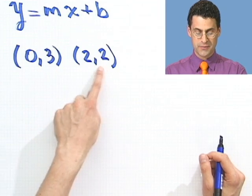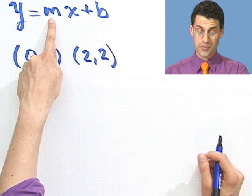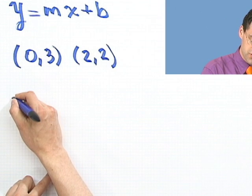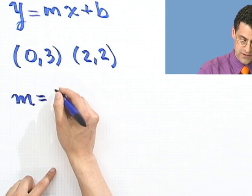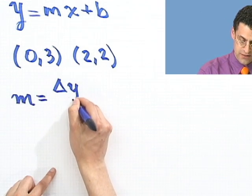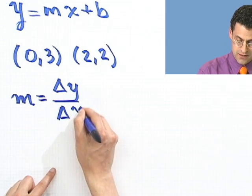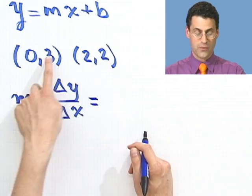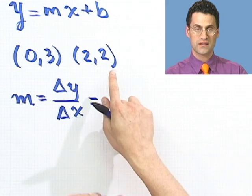Now let's think about that. I have (0,3) and (2,2). I want to find the slope. I need the slope. So what do I do? Well, that's just the change in y over the change in x. I've got to subtract the y from the y and then the x from the x. Always remember, subtract in the same order: y from y, x from x.